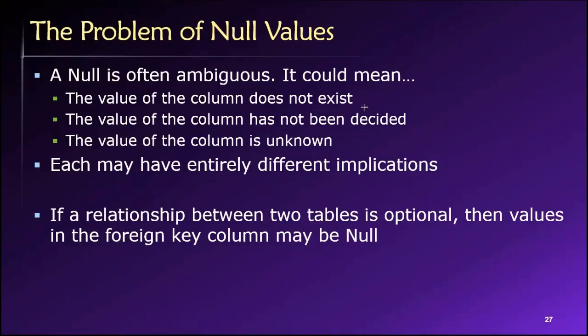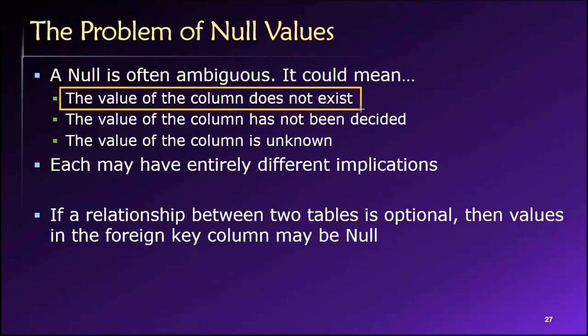So if we were trying to design an address table, we may have that second line of the address allow null values, because there is a possibility that a person does not need to enter a value on the second line if their street address doesn't require one. In that case, the value of the column does not exist, and that's the reason values of that attribute would be null.